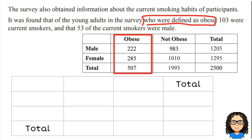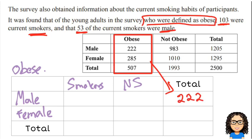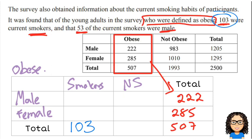From those obese people, 103 were current smokers, and 53 of those current smokers were male. That tells me I still need male and female columns, and I'm only looking at the obese people to see whether they are smokers or non-smokers. The total obese figures go into my total column: 222 males, 285 females, and 507 people in total. Then from the new information, the total number of current smokers is 103, with 53 of those being male.